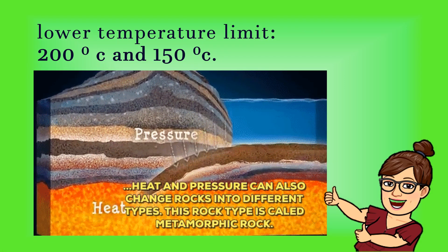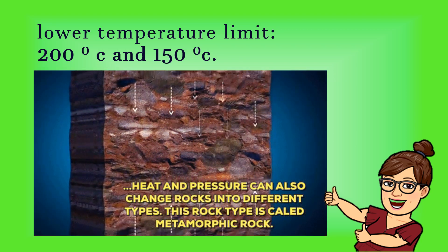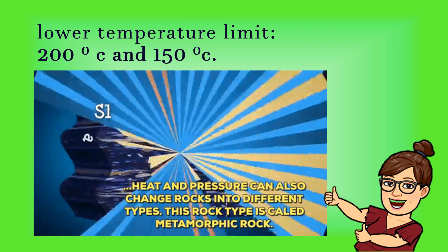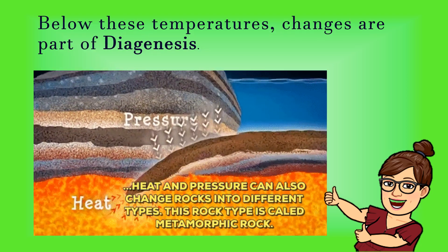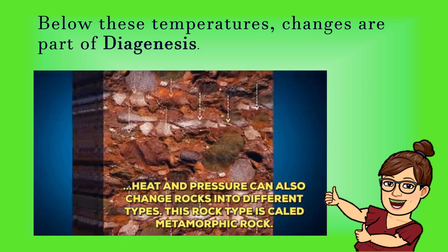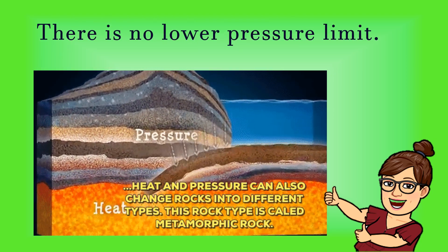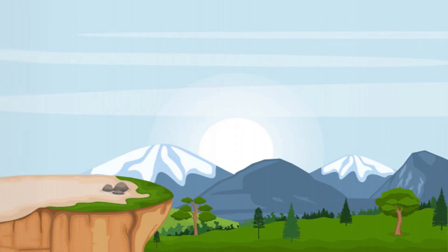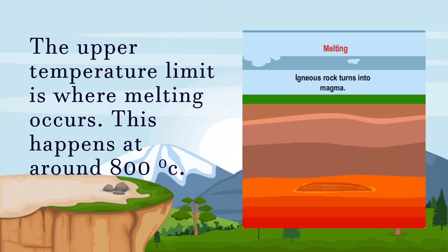The minerals produced are directly related to pressure and temperature conditions. The lower temperature limit for metamorphism is between 200 degrees Celsius and 150 degrees Celsius. Below these temperatures, changes are part of diagenesis. There is no lower pressure limit. The upper temperature limit is where melting occurs, at around 800 degrees Celsius.